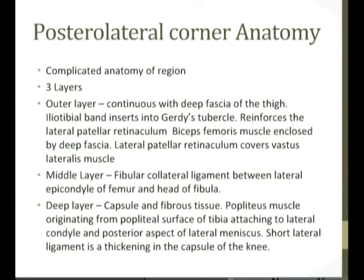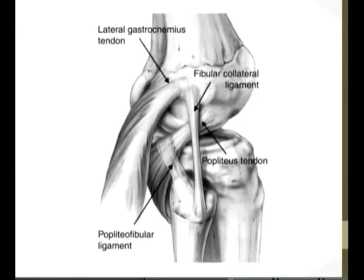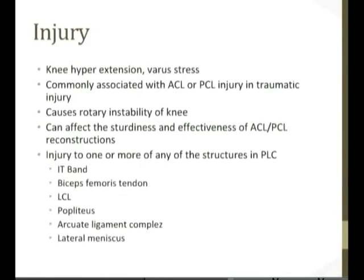The popliteus muscle attaches to the lateral condyle of the femur and the anterior aspect of the lateral meniscus. In terms of how posterolateral corner injuries occur, it's usually a knee hyperextension with varus stress, commonly associated with ACL or PCL injury and traumatic injuries, and it causes rotatory instability of the knee.